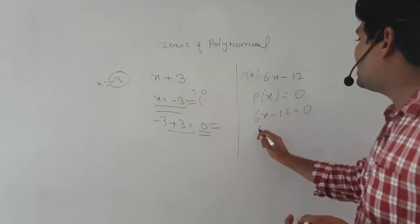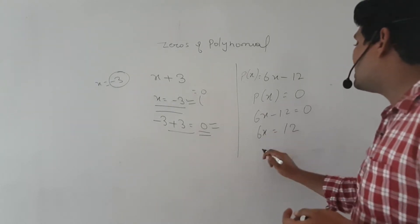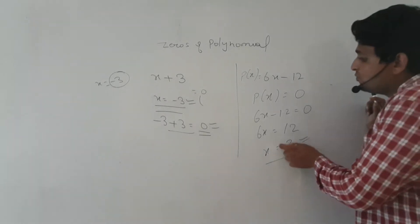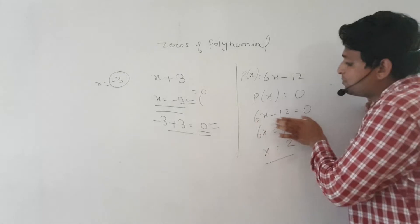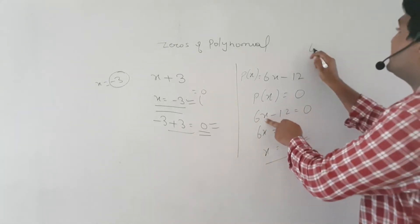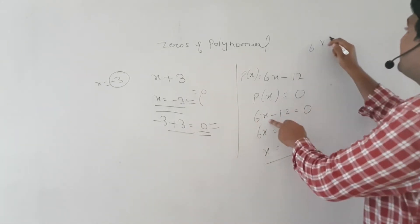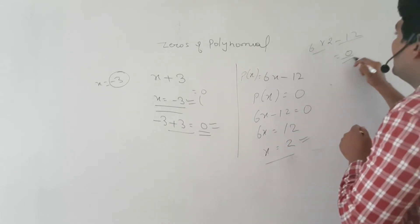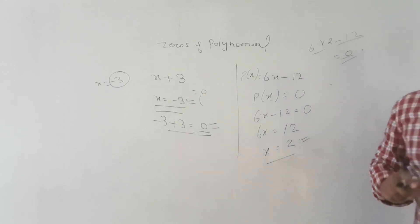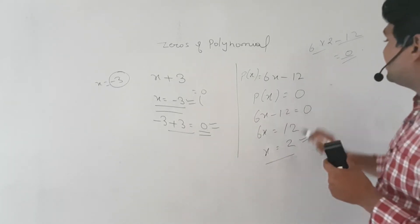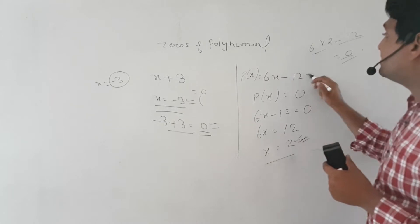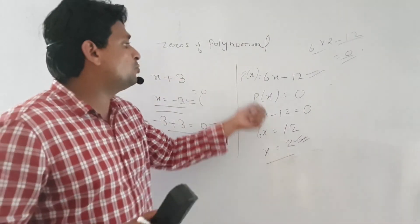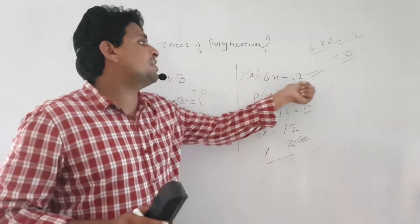You will solve for x. So 6x is equal to 12, and the value of x is 2. To verify: put x equal to 2 — that is 6 multiplied by 2 minus 12, which equals 0. So x equals 2 is the zero of this polynomial, because when we put that x value in, the polynomial becomes 0.